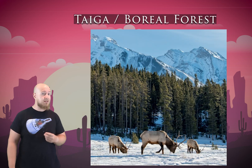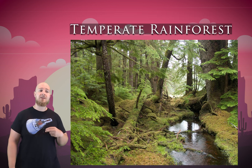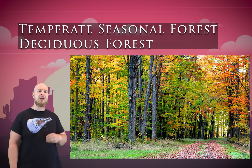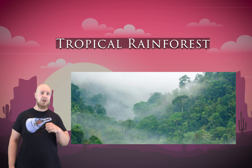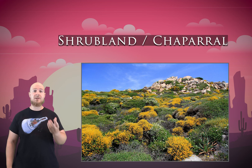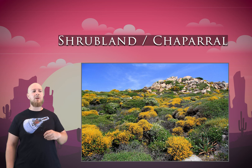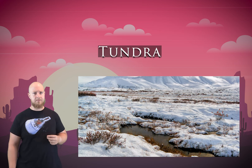The nine major terrestrial biomes, in no particular order, are the taiga, the temperate rainforest, the temperate seasonal forest (sometimes called the deciduous forest), the tropical rainforest, the shrubland (sometimes called the chaparral), the temperate grassland, savanna, desert, and tundra.